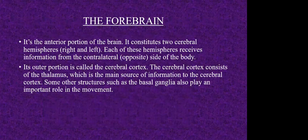Let's begin with the forebrain. The forebrain is basically the anterior portion of the brain. It consists of two sides or two hemispheres — the left cerebral hemisphere and the right cerebral hemisphere. Each of these hemispheres receives information from the opposite side of the body. In layman terms, all body information from the left-hand side goes to the right cerebral hemisphere, and all information from the right side of our body goes to the left cerebral hemisphere.